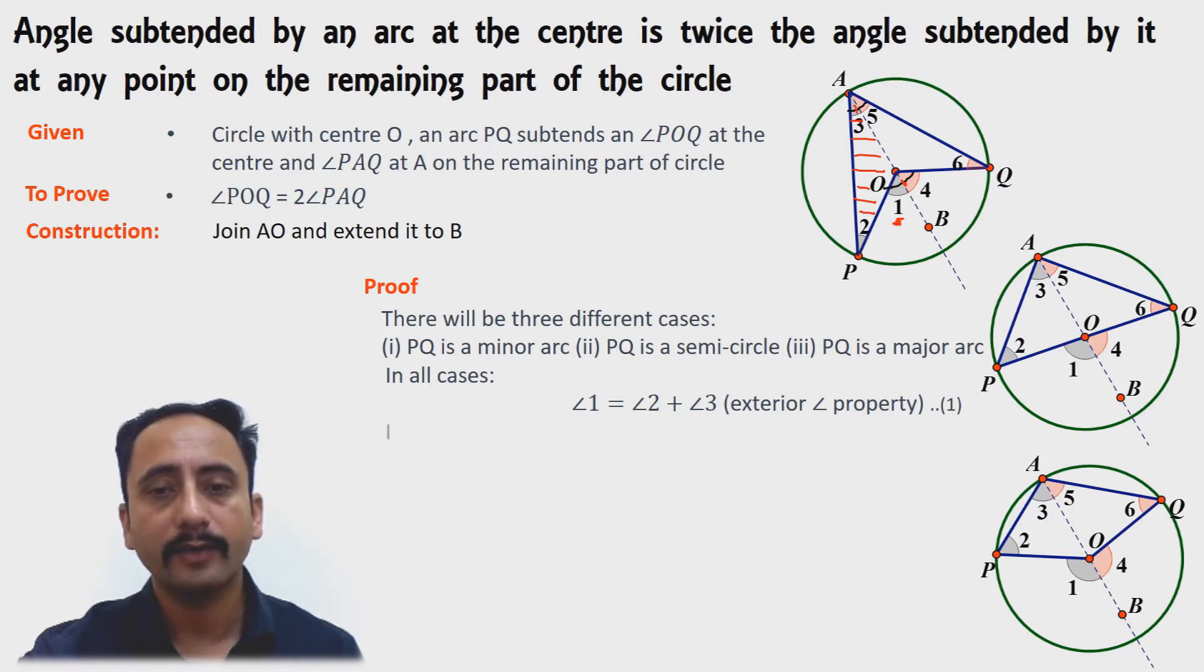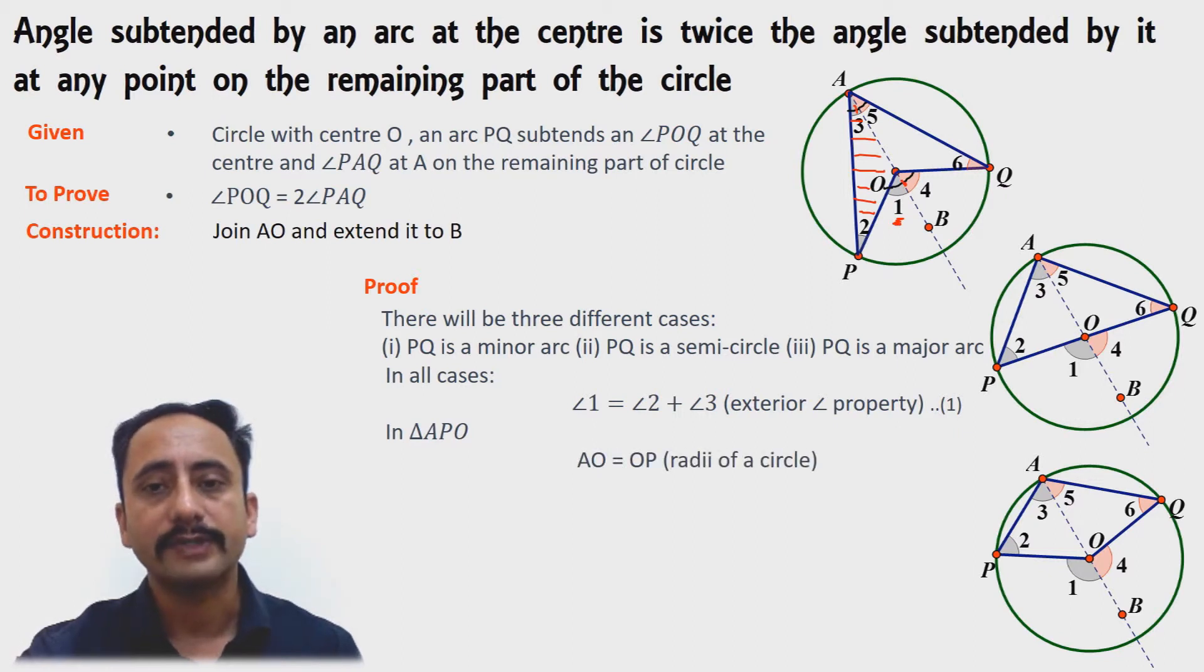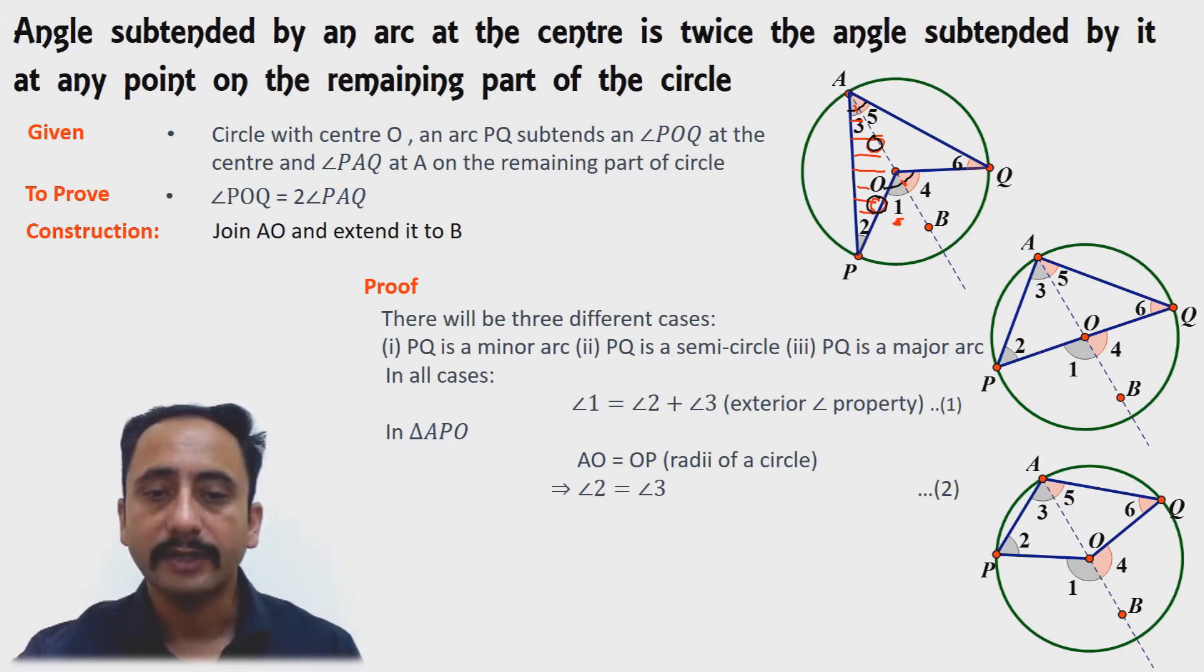Moreover, in triangle AOP, you will observe that AO equals OP because these are the radii of the circle. If these two sides of a triangle are equal, then the angles opposite them are also equal, so angle 2 equals angle 3. Using this in equation number 1...